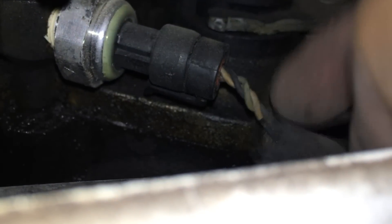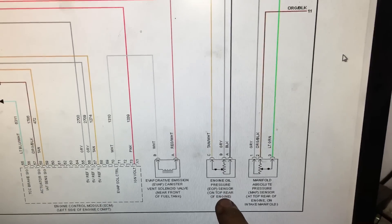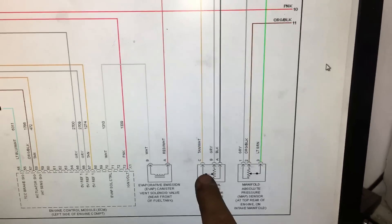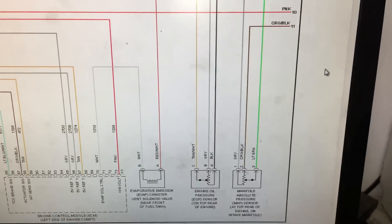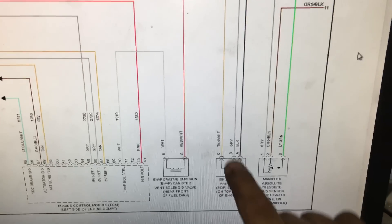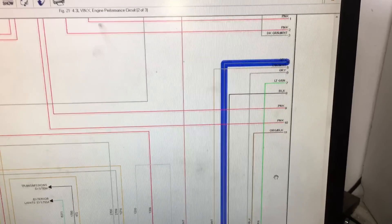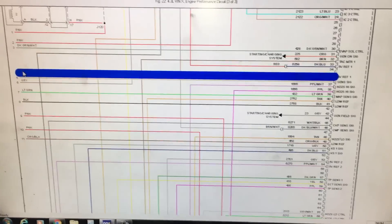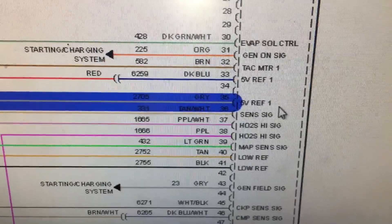Let's pull up the wiring diagram and see which wire is our 5-volt reference, which is our signal, and which is our ground. Looking at the oil pressure sensor — it is a three-wire sensor. The tan-and-white wire is the signal wire going back to the computer, the gray wire is our 5-volt reference voltage feed, and the black wire is the ground. We can confirm the gray wire is the 5-volt reference by following it back to the computer, where it's labeled '5-volt reference 1.'